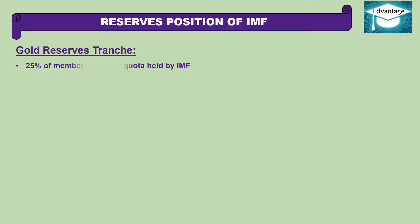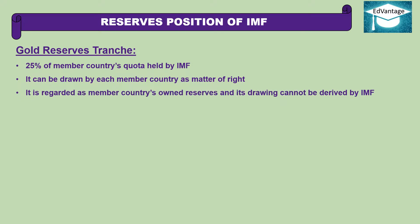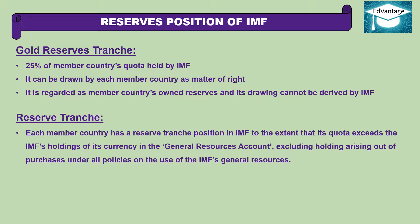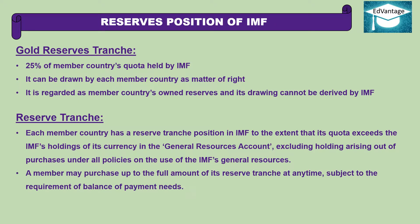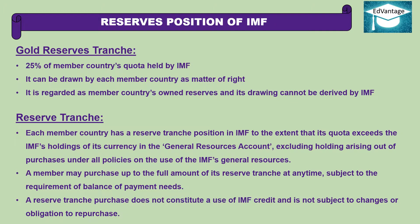Gold Tranche: 25% of a member country's quota held by IMF can be drawn by each member country as a matter of right. It is regarded as the member country's own reserves and its drawing cannot be denied by the IMF. Reserve Tranche: Each member country has a reserve tranche position in IMF to the extent that its quota exceeds the IMF's holdings of its currency in the general resources account. A member may purchase up to the full amount of its reserve tranche at any time, subject to balance of payment needs. A reserve tranche purchase does not constitute use of IMF credit and is not subject to charges or obligation to repurchase.